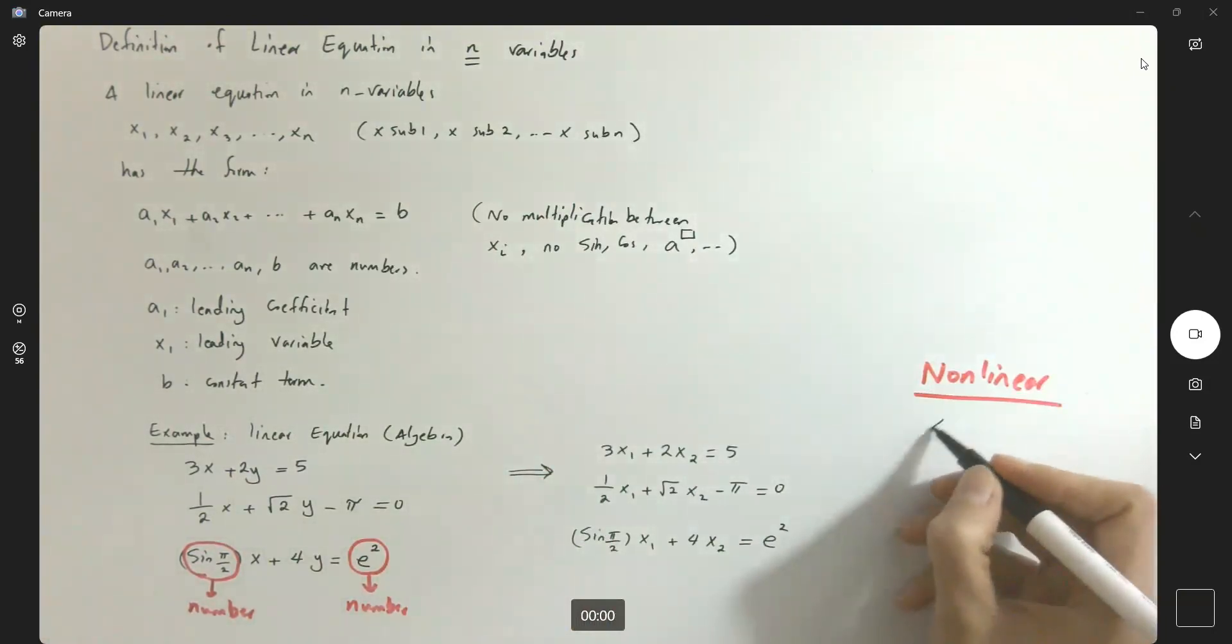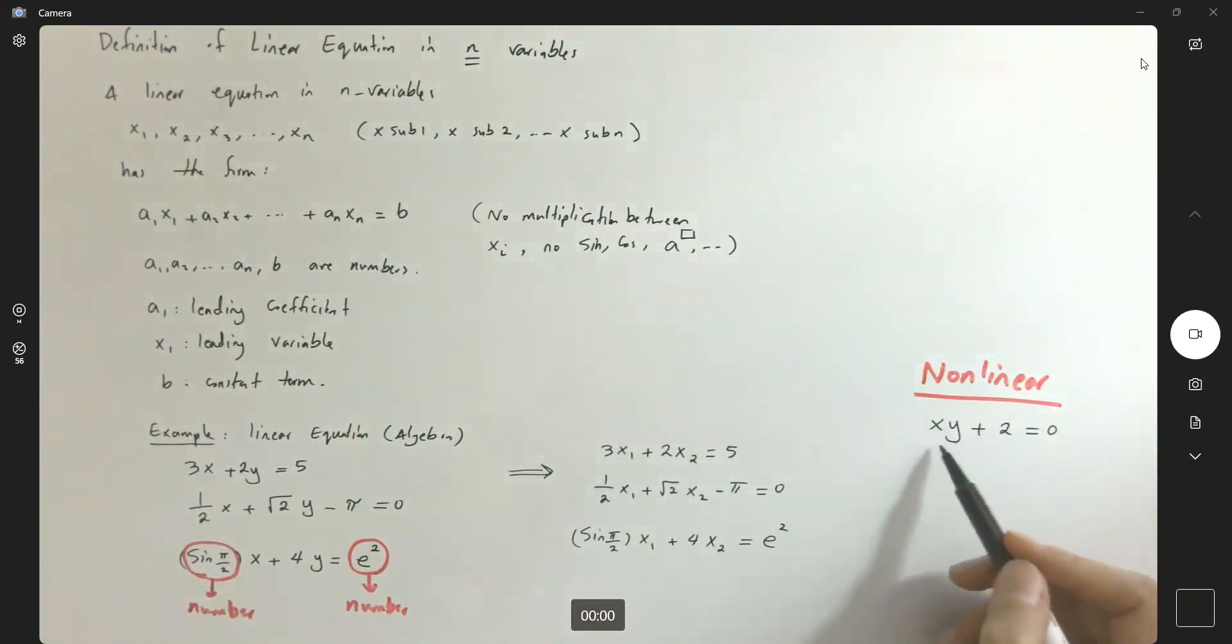For example, if you have x times y plus 2 equal to 0. This is an example of a non-linear equation because you have multiplication between two variables. Or if you have e to power x minus 2y equals to 4. Because you have exponential function here. It's not linear.